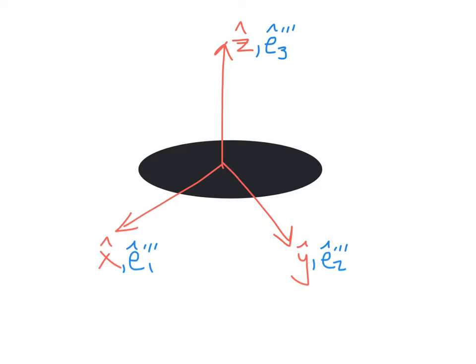These E coordinate axes are going to be the coordinates that are fixed to the body. The red coordinate axis shown here is going to remain fixed, but the blue coordinates are going to rotate with the Euler angles. So the very first thing we do to implement the Euler angles is we rotate our blue coordinate axis about the z-hat or E3 triple prime axis by an angle phi. E1 triple prime rotates by angle phi, and E2 triple prime rotates by angle phi. That represents a rotation vector phi, which points along the E3 triple prime or z-hat axis.